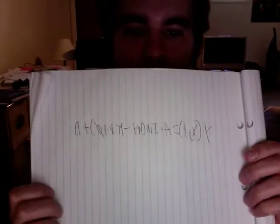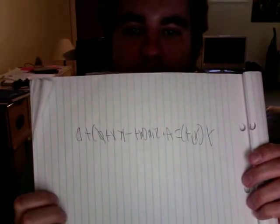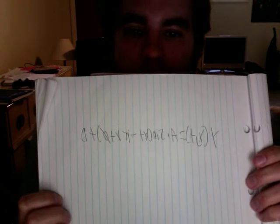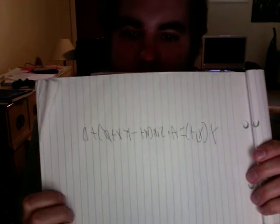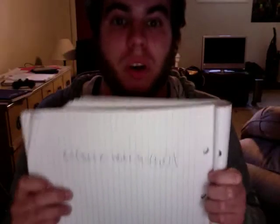I guess I have it backwards, but: Y(X, T) = A times sin(WT minus KX plus phi) plus D. I don't really know what that means at all, but this is the problem that uses it to warp, make the sine line work. So, good job.